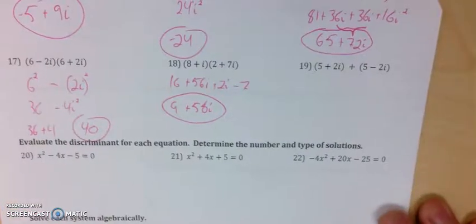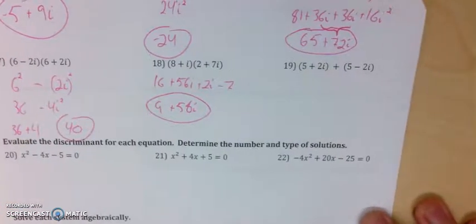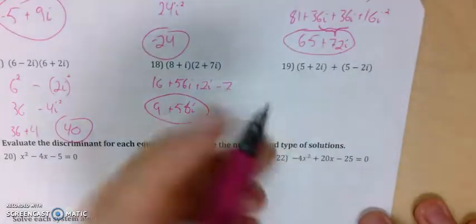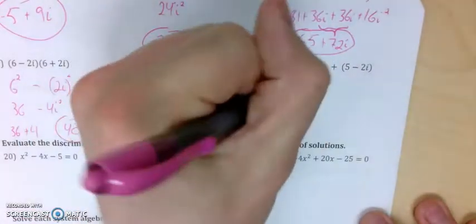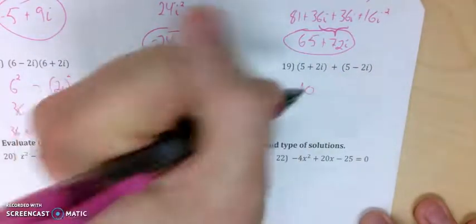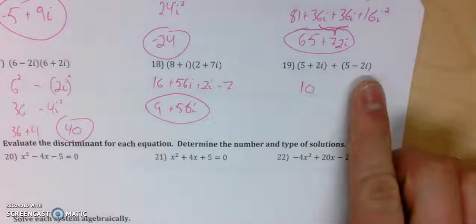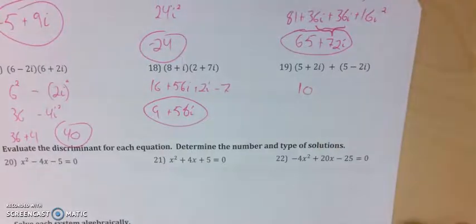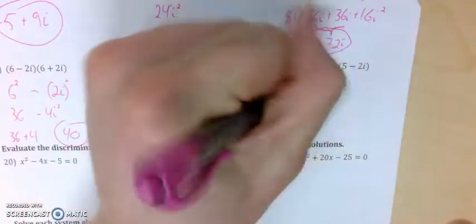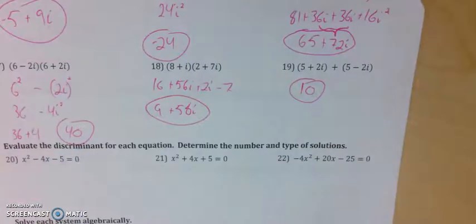Number 19 is just straight combining like terms: 5 plus 5 is 10, and 2i plus negative 2i gives 0i, so the answer is simply 10.